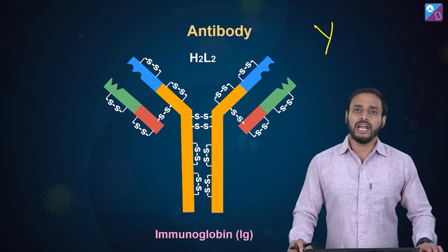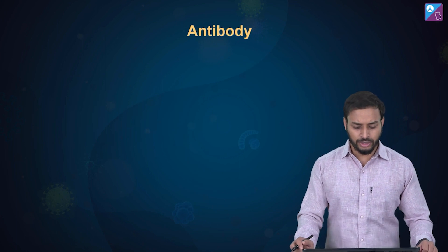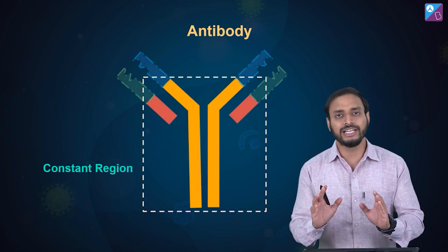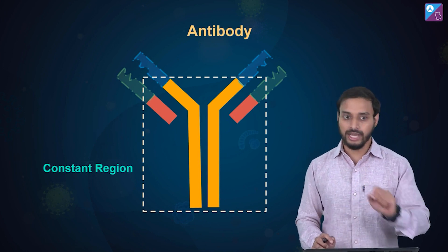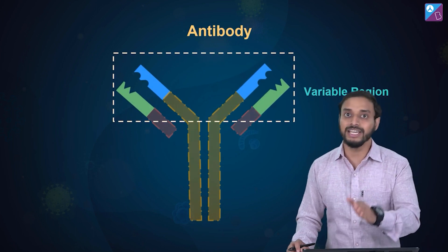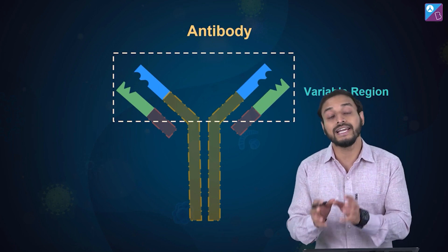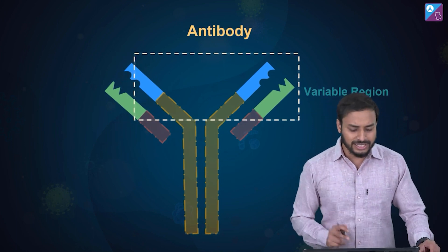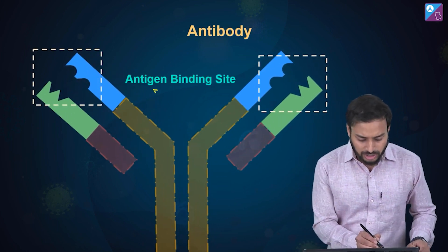This structure has two regions. First is the constant region — as the name suggests, it is fixed and does not change. The second region is the variable region, which is not fixed — it can undergo conformational changes.